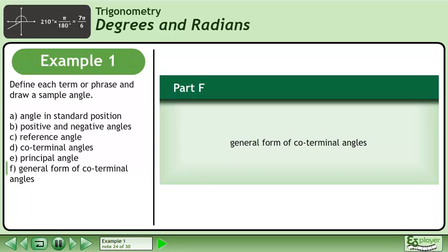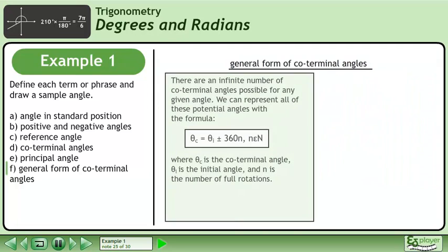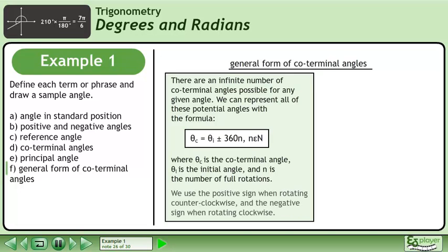In Part F, we'll define the general form of coterminal angles. There are an infinite number of coterminal angles possible for any given angle. We can represent all of these potential angles with the formula shown, where θc is the coterminal angle, θi is the initial angle, and n is the number of full rotations. We use the positive sign when rotating counter-clockwise and the negative sign when rotating clockwise.